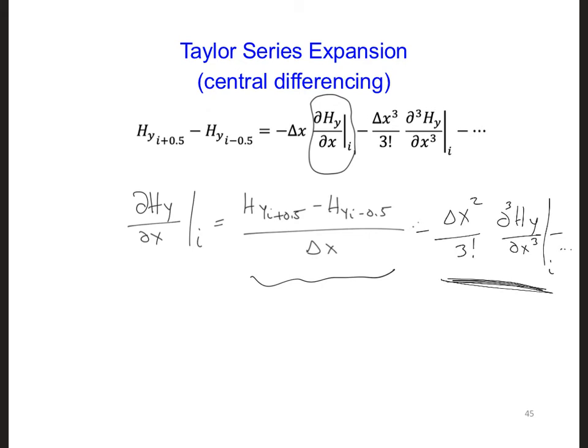And this approaches zero as Δx squared approaches zero. As the space increment between our solutions of Hy gets smaller and smaller, the error is going to get smaller much faster. It's going to get smaller at a rate of Δx squared. So in other words, central differencing is second order accurate.